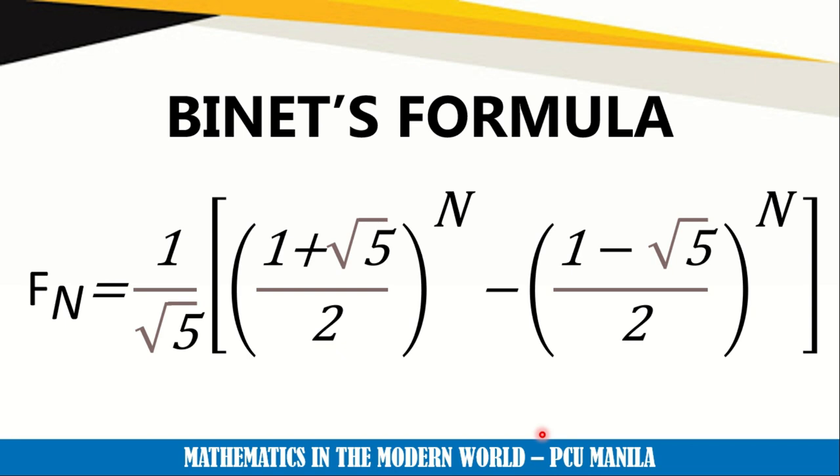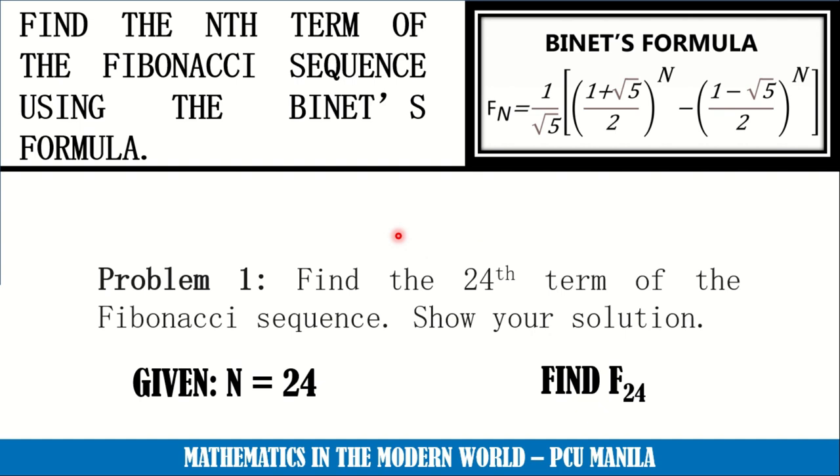Let us continue. This is our Binet's formula: F sub n equals 1 over square root of 5 times the quantity of 1 plus square root of 5 over 2 raised to n, minus the quantity of 1 minus square root of 5 over 2 raised to n. The n here is basically the term position that we are looking for. Therefore, if you are looking for the 30th term, the value of n must be 30.